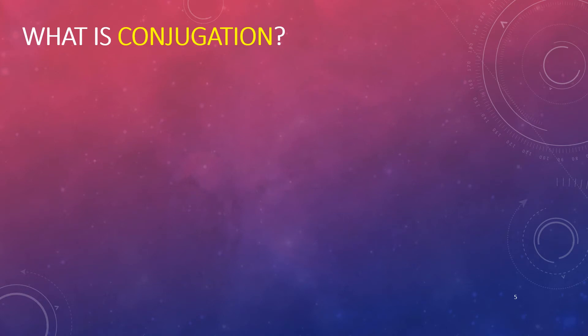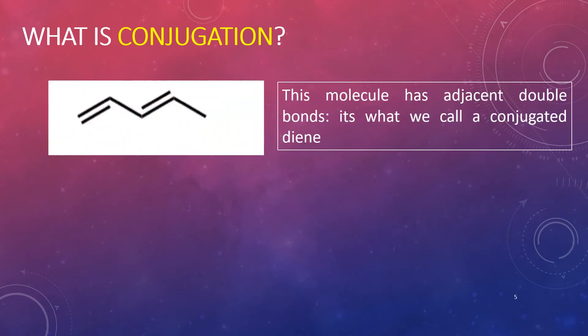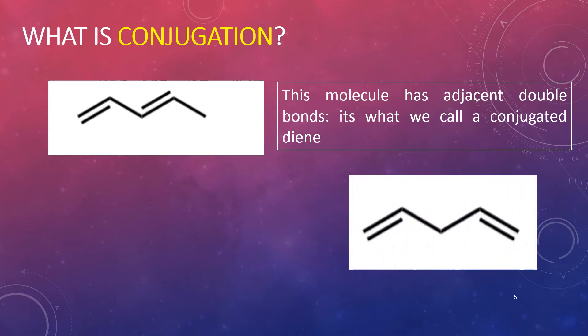Now, what is conjugation? Structures where we have adjacent double bonds are called conjugated systems. This is the minimum requirement for any organic compound to give absorbance in the UV region. Here, in this structure, we also see two double bonds, so this can also be called a diene system. 'Di' stands for two and 'ene' stands for double bonds, so both structures are diene systems.